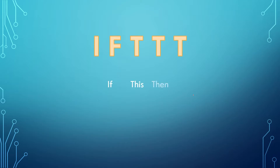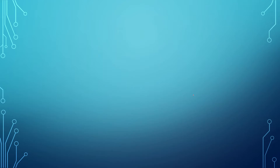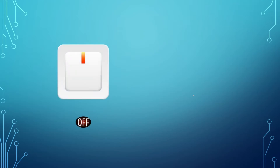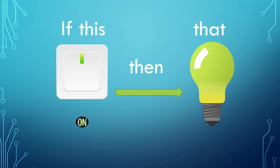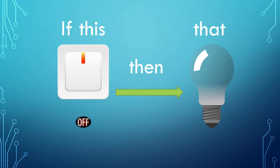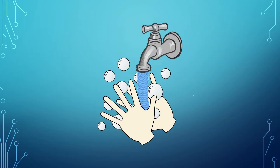IFTTT stands for 'If This Then That.' The concept is: if an event happens, trigger another event. As a real-life example, think of a street bulb — when you turn on the switch, it turns on the bulb. That is the flow: if this is on, then that happens.